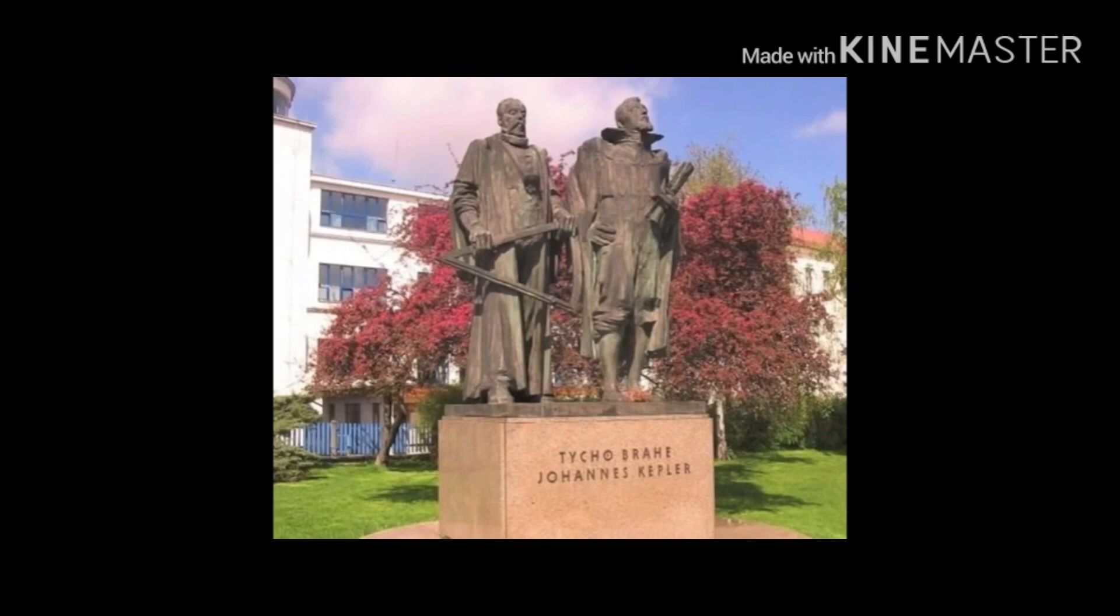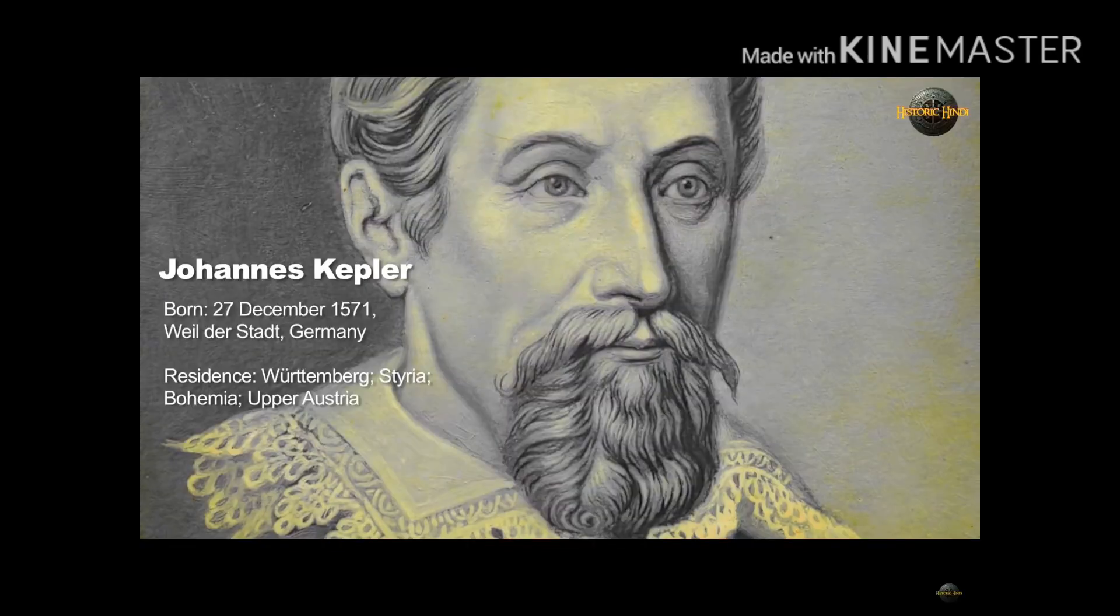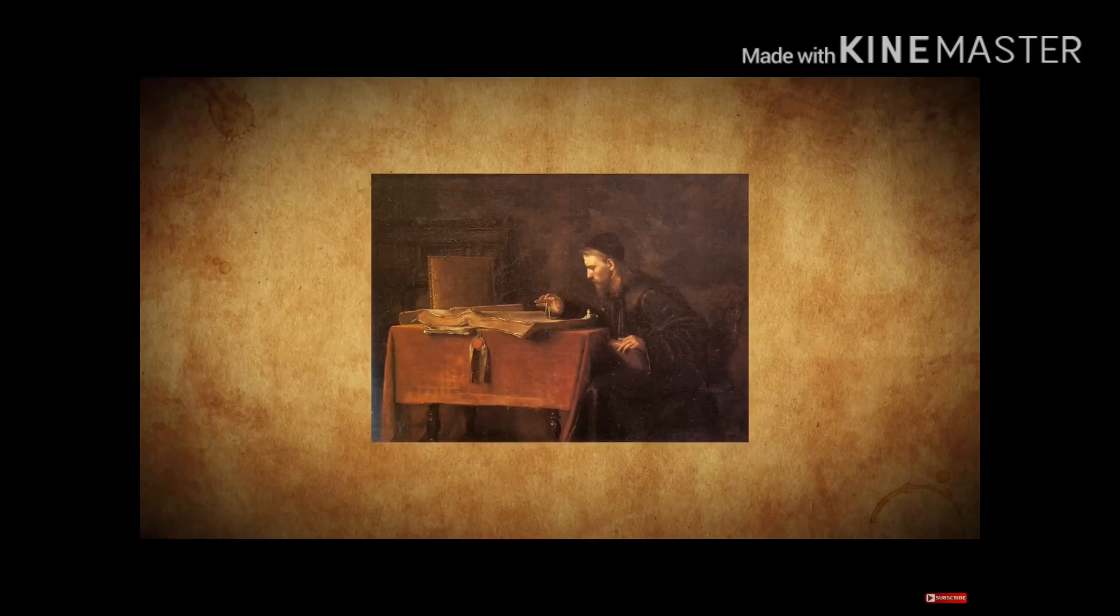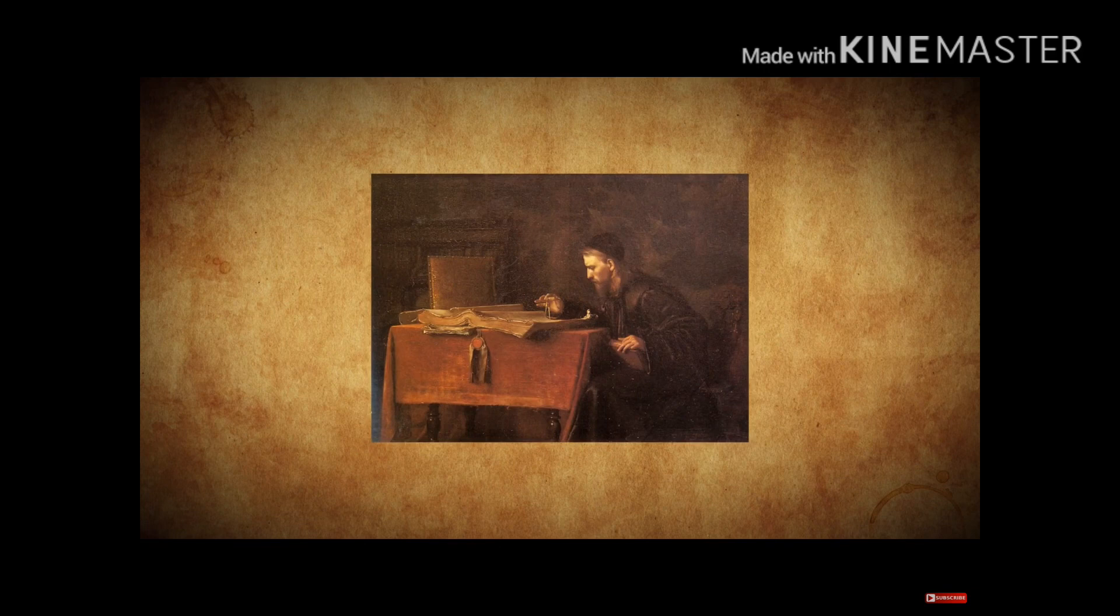It is also doubted that his assistant, a young man, Johannes Kepler, who often had heated arguments with Brahe, might have poisoned him to inherit his notes and maps. It is also believed that Kepler might have stolen the work of Brahe.